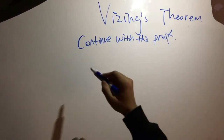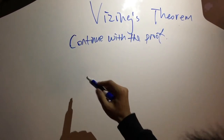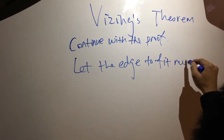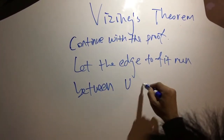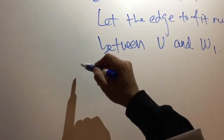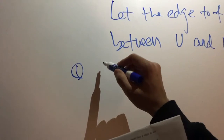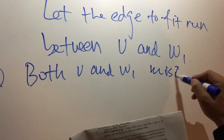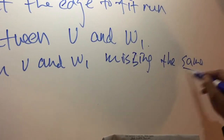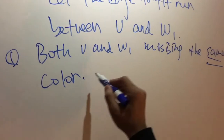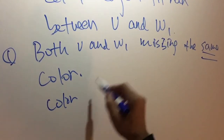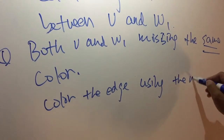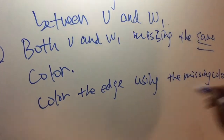Let's continue with the proof. As mentioned, we just need to think about the remaining edge. Let the edge to be considered connect V and W1. The first case is that both V and W1 are missing the same color. So we only need to color the remaining edge using this missing color, and then we are done.